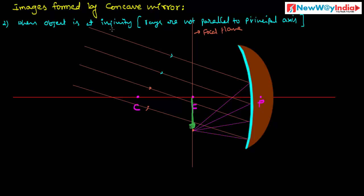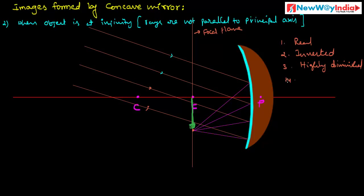When the object is at infinity and the rays are not parallel to the principal axis, the image is formed on the focal plane. The characteristics of this image are: it is real and inverted, it is highly diminished, and it is formed in the plane of the principal focus.